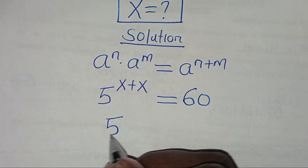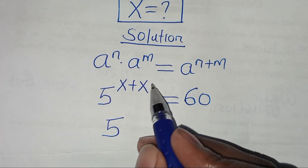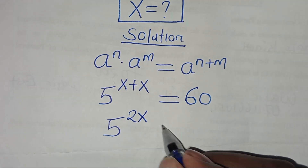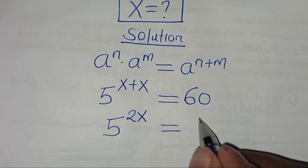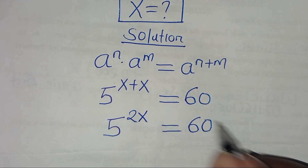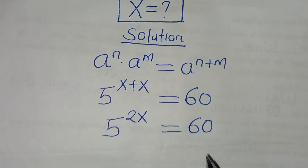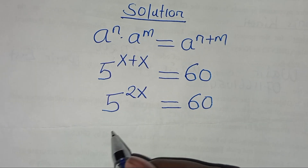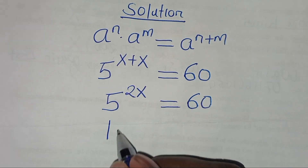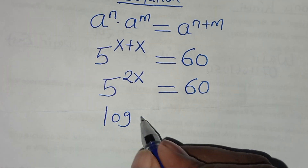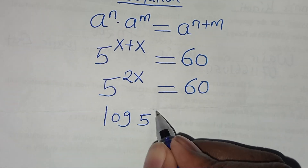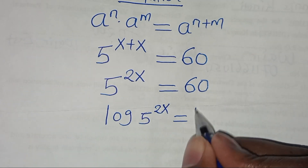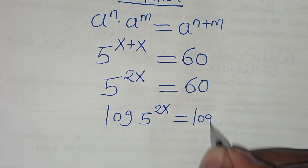We have that 5 to the power of x plus x, this is equal to 2x, which is equal to 60. Now, to solve for x here, we introduce logarithm on both sides, so that we have log 5 to the power of 2x, which is equal to log 60.